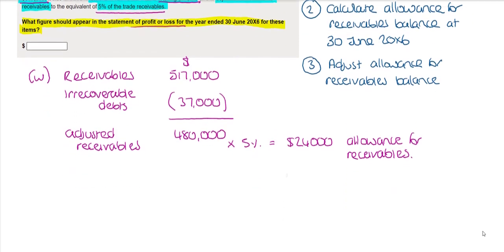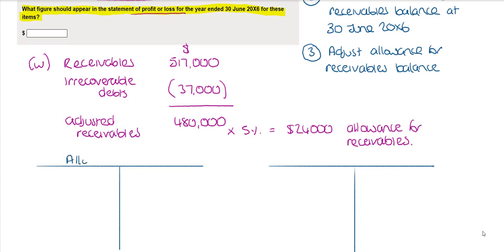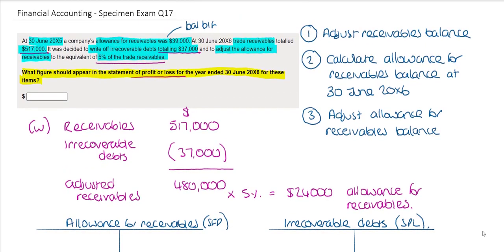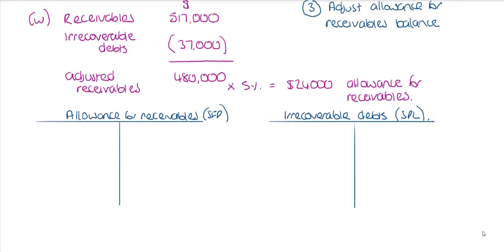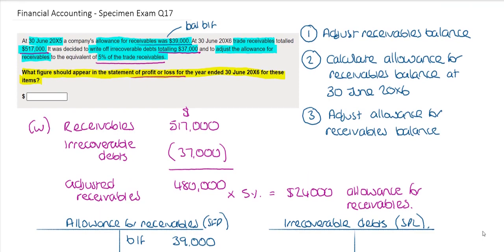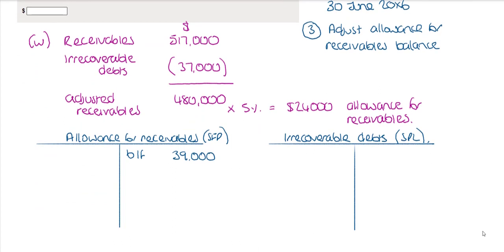Let's look at the ledger accounts so we can see the movements. We will have an allowance for receivables account, which belongs in the statement of financial position, and an irrecoverable debts account, which belongs in the statement of profit and loss. From the question, the opening balance for the allowance for receivables was $39,000 on the credit side. The double entry for the write-off of $37,000 would be to debit the irrecoverable debts account and credit the receivables account, so we recognise that debit in our irrecoverable debts ledger account.